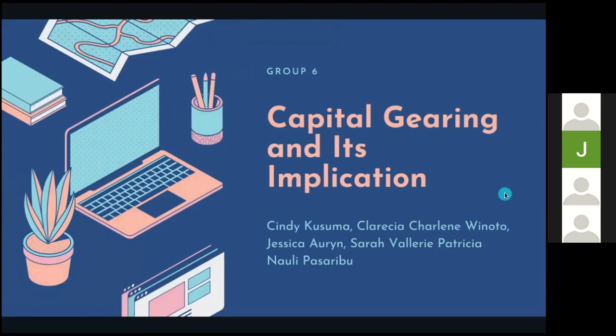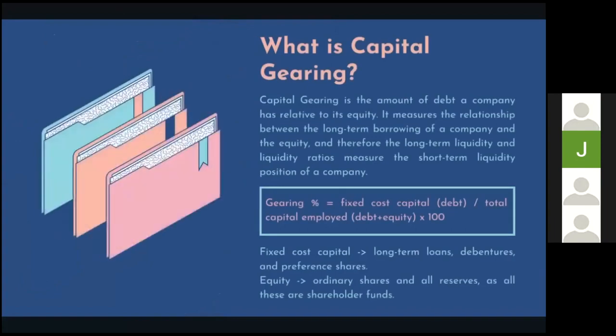So what is capital gearing? Capital gearing is the amount of debt a company has relative to its equity. It measures the relationship within the long-term borrowing of a company and the equity, and therefore the long-term liquidity. Liquidity ratios measure the short-term liquidity position of a company.